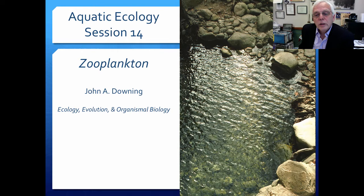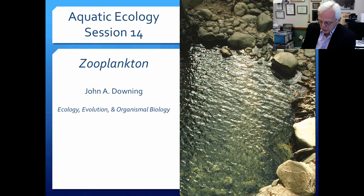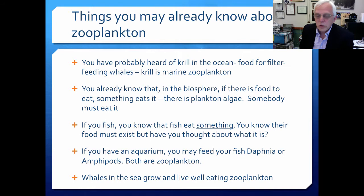Hi, my name is John Downing. I am the author of this set of lessons in limnology and aquatic ecology, and I am a limnologist and aquatic ecologist. This session is going to be on zooplankton — zooplankton of fresh waters or inland waters. You probably have heard of things called krill in the ocean. These are the amazingly small food for filter-feeding whales. Krill is marine zooplankton, and we have things in fresh waters that are very much like krill also.